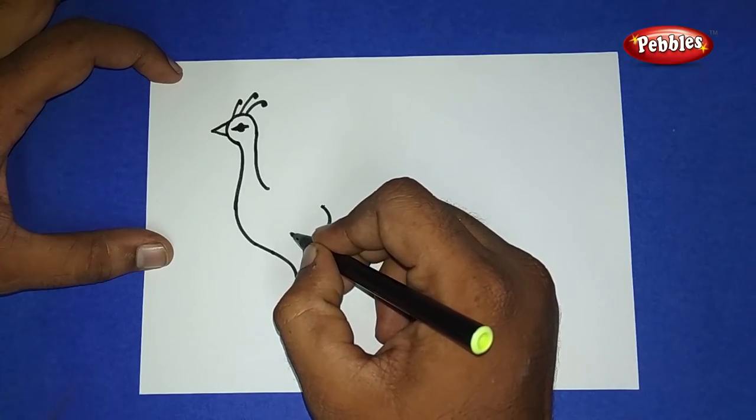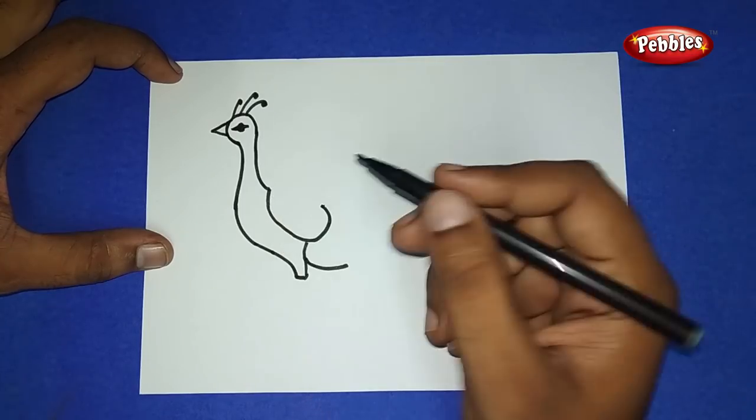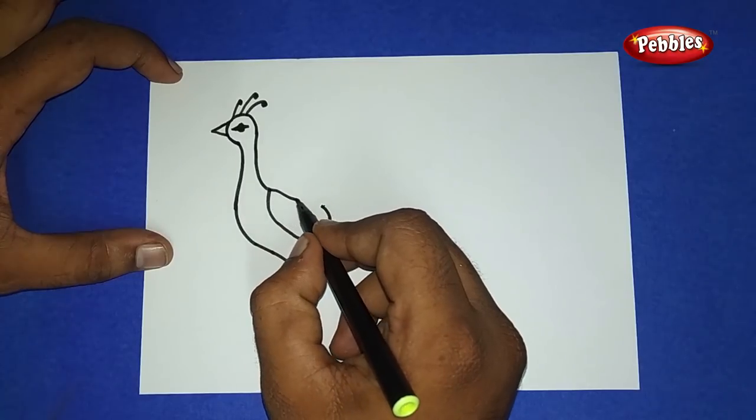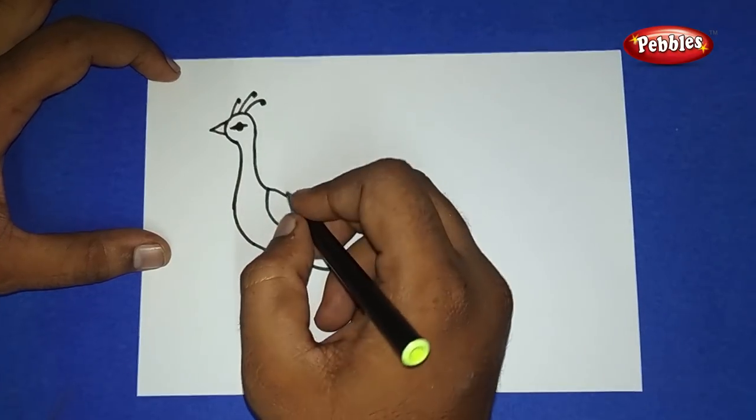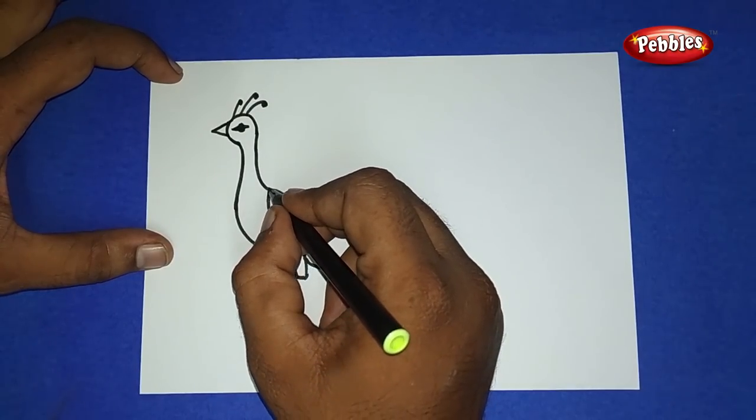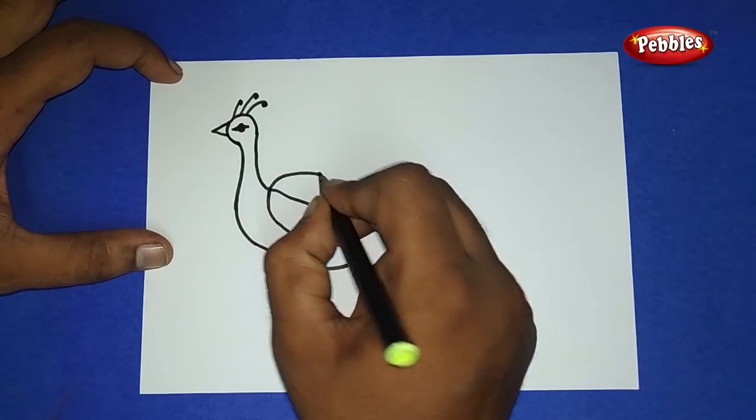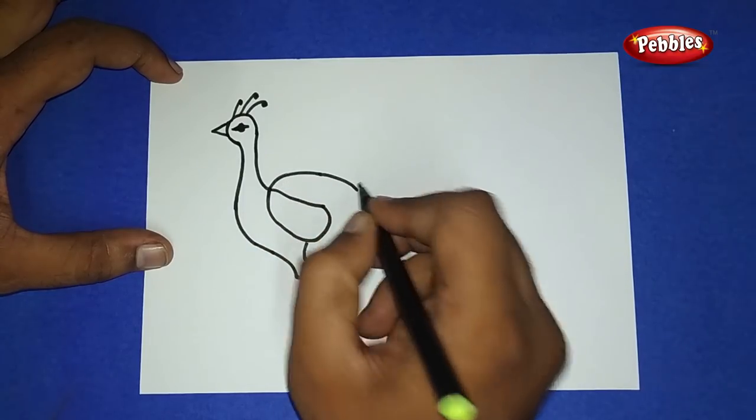And now draw a downside arch and close that one. Again, go upside and draw like this.